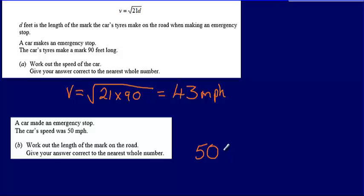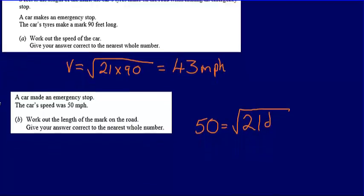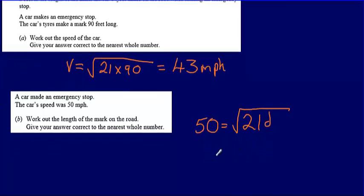So what I need to do is solve an equation where 50 is equal to the square root of 21 multiplied by d, or the length of the mark on the road. All I need to do is solve this equation.